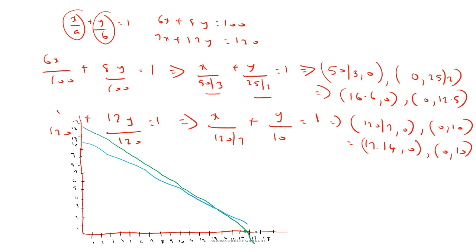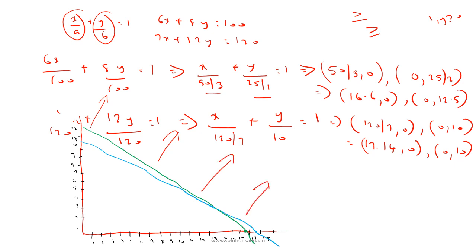The two lines intersect at some point. Since the constraints are greater than or equal to, and x, y ≥ 0, the feasible region lies above both lines. The corner points of the feasible region are the key points at which we evaluate the cost function to find the minimum.